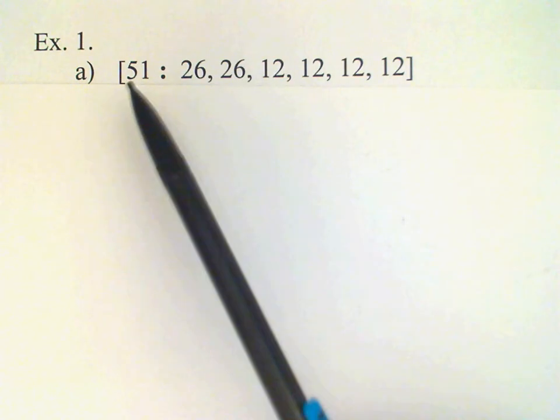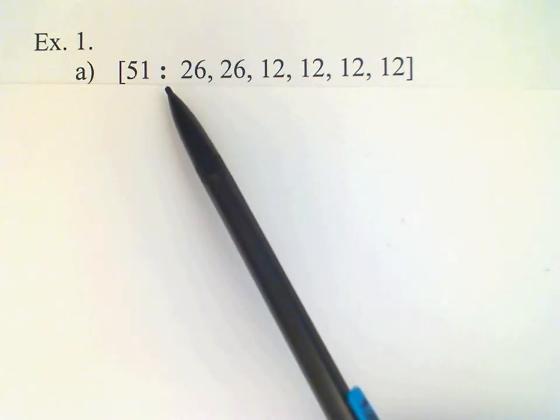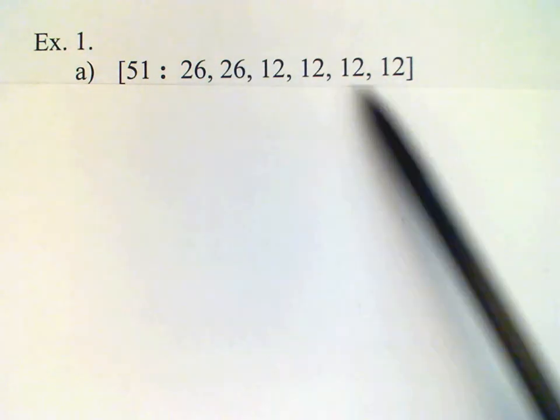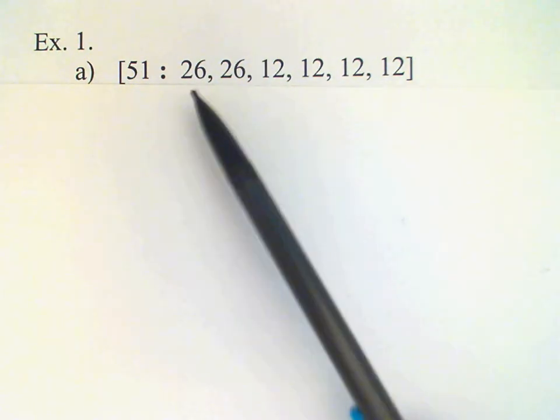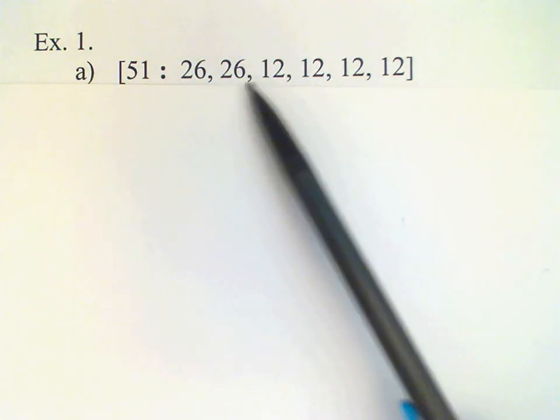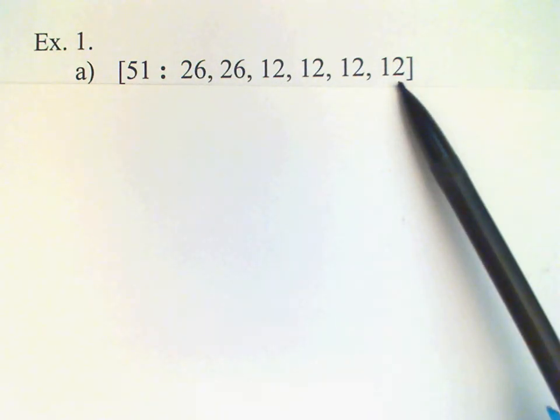Let's look at a few of these. Our first example, in all these cases, we'll have the quota given first in square brackets followed by a colon, and then a list of weights separated by commas. In this system [51: 26, 26, 12, 12, 12, 12], we see that two of the voters have 26 votes each, and then the other four voters have 12 votes each.